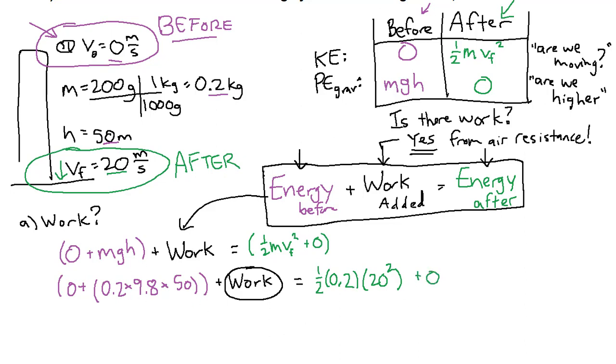So we can simplify this a bit. The before terms, there's only one term total, and that's 98 joules. We've been introduced to this new unit, and we do want to get used to it. Plus our unknown work is equal to, and on the right side, we have 40 joules. All we have to do to solve for work is subtract 98 joules from both sides. And we get that our work here, our work done by air resistance or work added by air resistance is negative 58 joules.